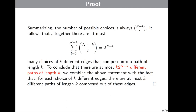To obtain the formula from the theorem, we combine this statement with the previous fact: for each choice of K different edges, there are at most K different paths of length K composed from these edges. This is the end of the proof and my presentation.